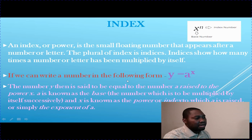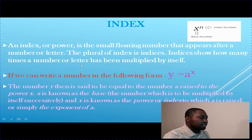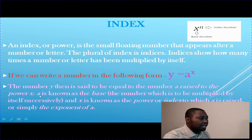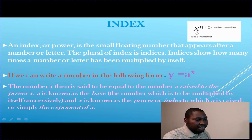If we can write a number in the following form — y equals base a to the power of x — the number y is said to be equal to the number a raised to the power of x. A is known as the base, meaning the number which is to be multiplied by itself successively. And x is known as the power, or the index, to which a is raised, or simply the exponent of a.